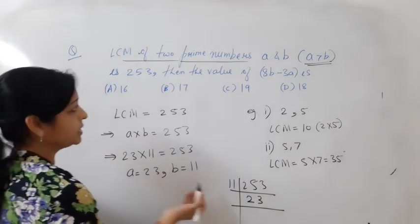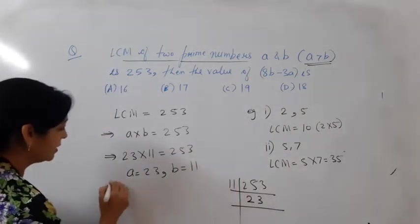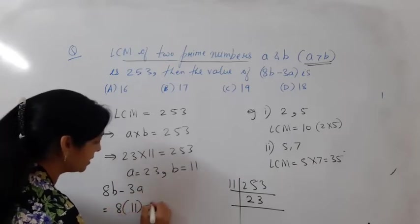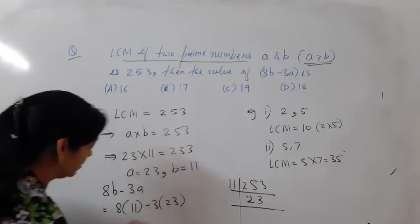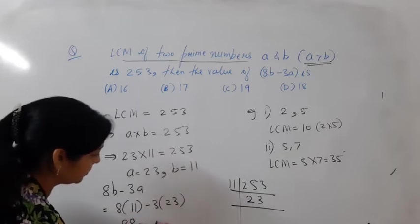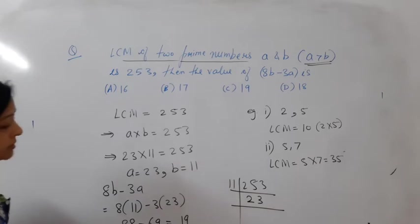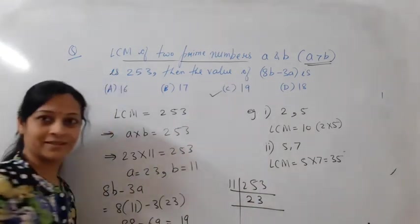Now we have the numbers A and B. You can easily find 8B minus 3A. That is 8 into B, which is 11, minus 3 into A, which is 23. Just solve it, and this is our required result. Thank you.